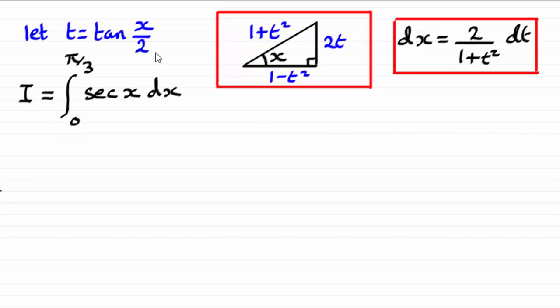And I'm assuming that you've watched the previous video where I showed you these two results here. Where we had a triangle with the angle x in and I was able to work out the lengths of these sides based on this formula here. So we had our sides in terms of t. I also showed you that if you differentiated t here with respect to x, you would end up with this result.